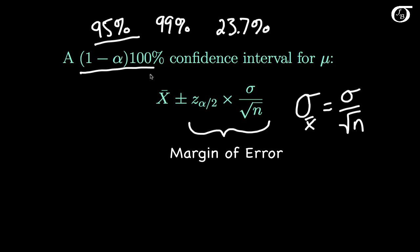The confidence level here is tied in with this z value. The appropriate z value is based on the confidence level. Let's look at that.